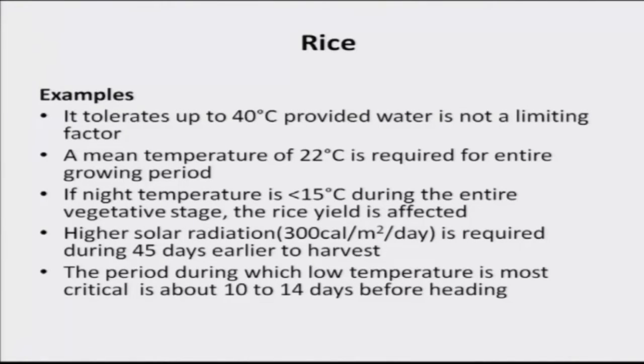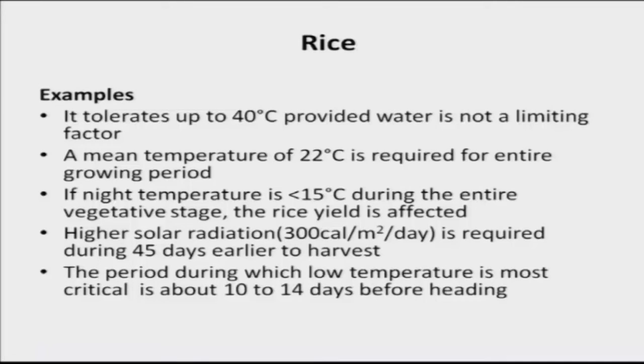The period during which low temperature is most critical is about 10 to 14 days before heading. In the case of rice, heading is the stage just before flowering — about 3 to 4 days earlier — when the bulge portion comes out from the stem. Rice stages include nursery, seedling, vegetative, heading, and flowering. If low temperature occurs 10 to 14 days before heading, heading may not occur, meaning optimum temperature is required for rice at this stage. There are many such examples and many gaps that must be addressed through research by agro-meteorologists or agronomists.